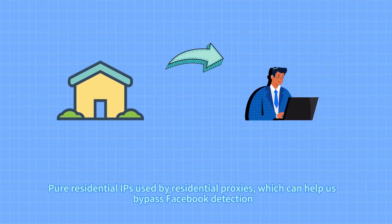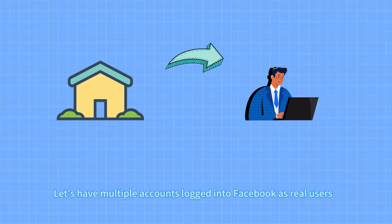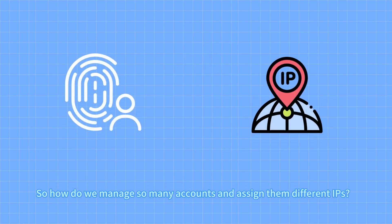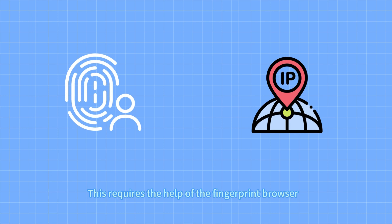Residential proxies use peer residential IPs, which can help us bypass Facebook detection, letting multiple accounts log in as real users. Managing so many accounts with different IPs requires the help of a fingerprint browser.